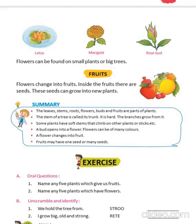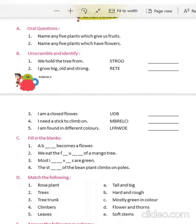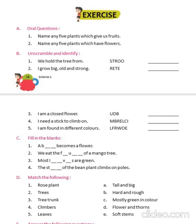Let's come to the exercise part. Oral questions: Name any five plants which give us fruits — mango, orange, apple, papaya, coconut. Name any five plants which have flowers — rose, lotus, marigold, lily, jasmine.